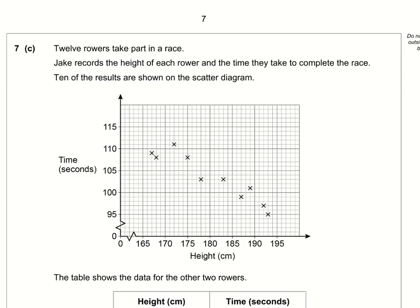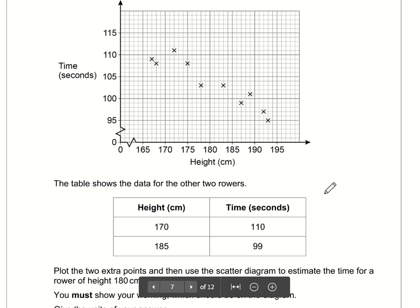12 rowers take part in a race and Jake records their height and the time on this graph here. There are two missing and we need to plot these. So we have 170, 110. So 170 height up to 110, that is going to be plotted there. And 185 which is here 99. So here's 100 so 99 will be just one less than it. So we've done that part. We've plotted the two extra points.